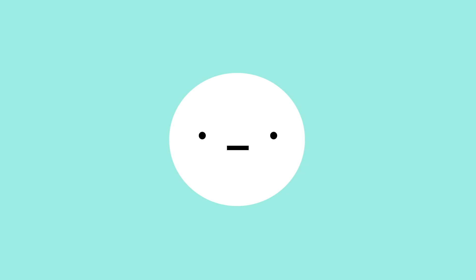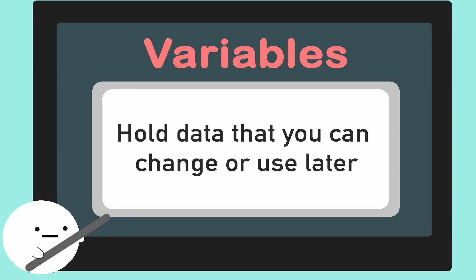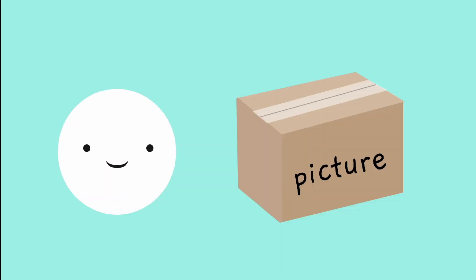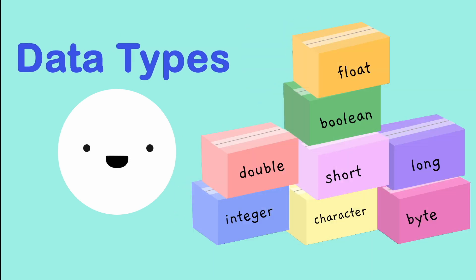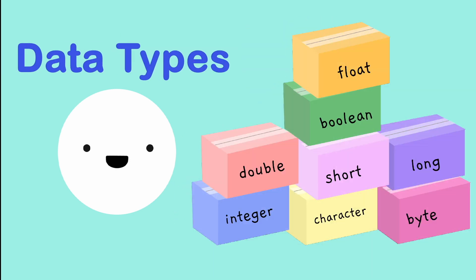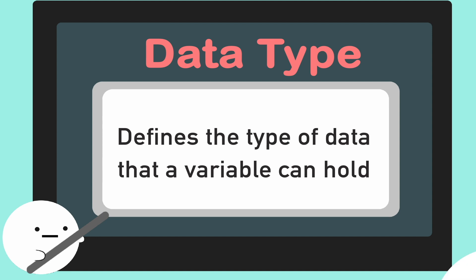A variable works the same way as this metaphor. There are storage locations with assigned names that hold data that you can use and change later on. Like a box, variables can hold a whole variety of categories. In programming, these things would be known as data types. A variable's data type determines the type of data that it can hold — hence the name data type.